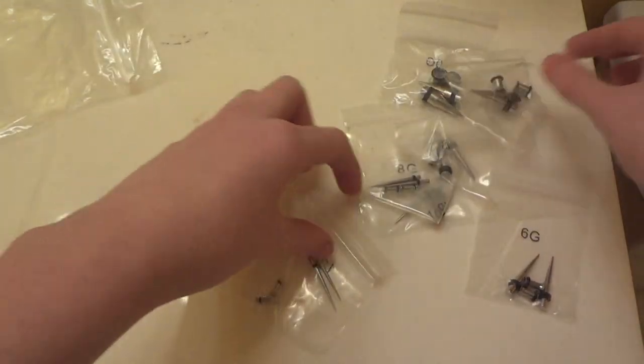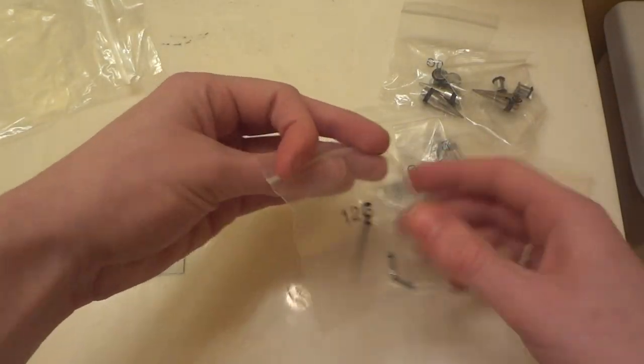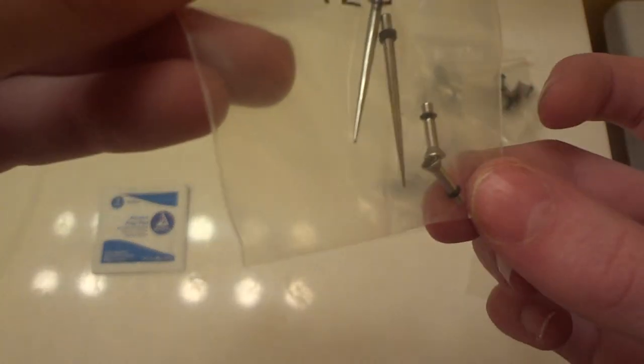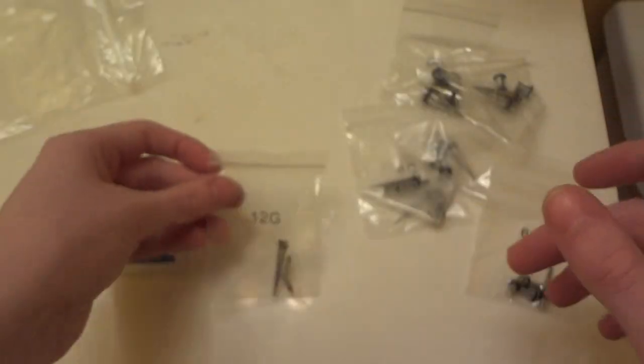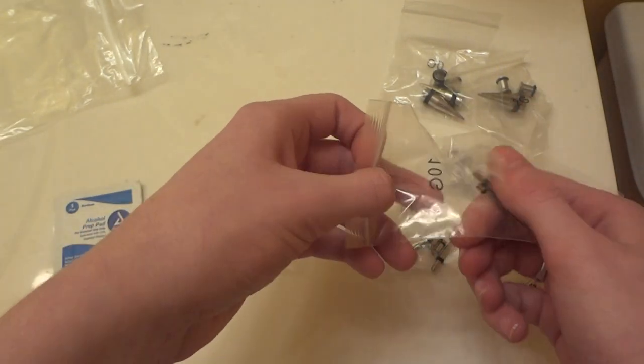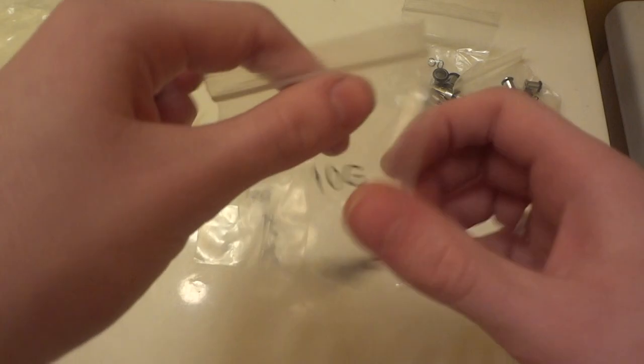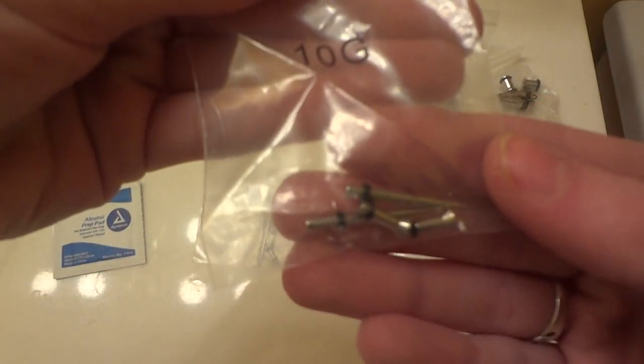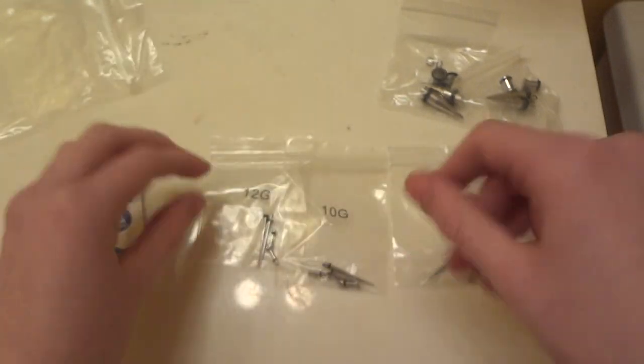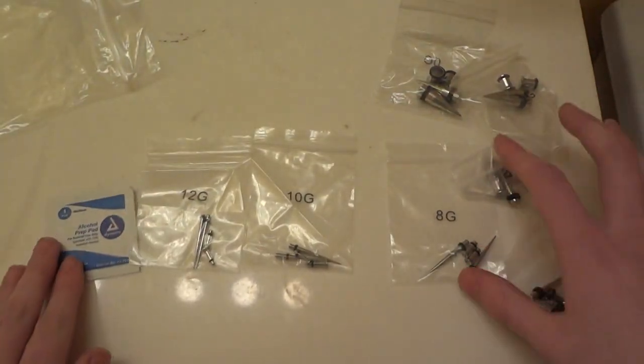Those are 12. Itty bitty baby tunnels. Crazy how small those are. I don't know if this comes with 14. There's 12. Here's 10 where I'm at right now. Once again, itty bitty tunnels. It's time to size up definitely. I can tell they're a lot more healed.